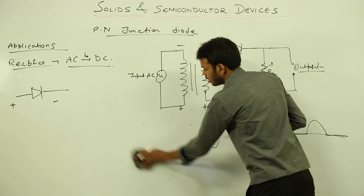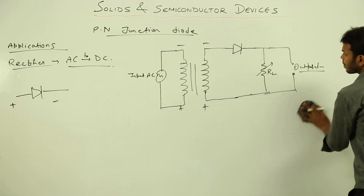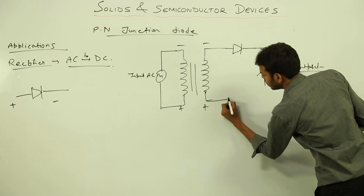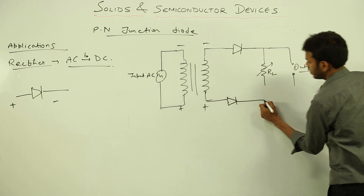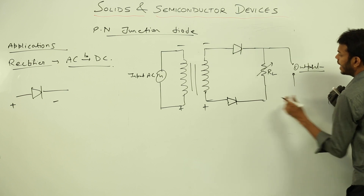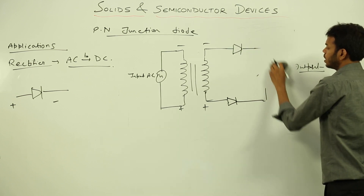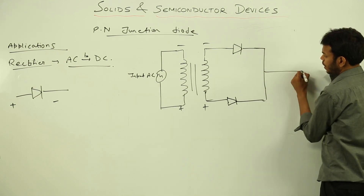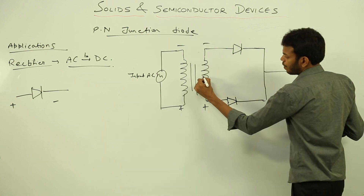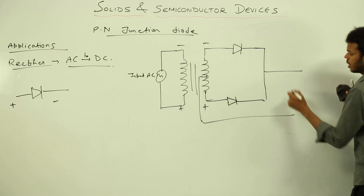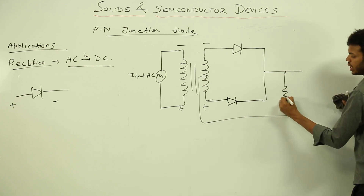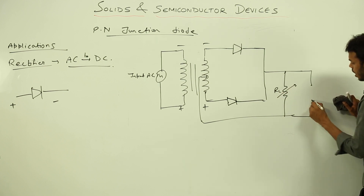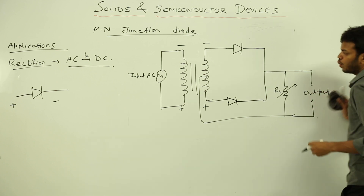Yes, there is a full wave rectifier. The circuit diagram of a full wave rectifier includes another diode. We take one connection from here and one connection from the center tapping, and we connect our load resistance RL here where we have our output.